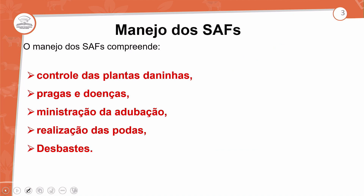O manejo do sistema SAF compreende: controle das plantas daninhas, controle de doenças e pragas, ministração de adubação, e realização de podas e desbaste.